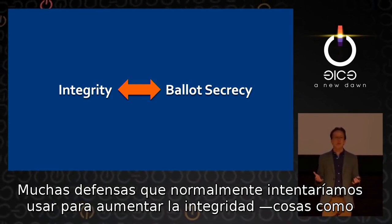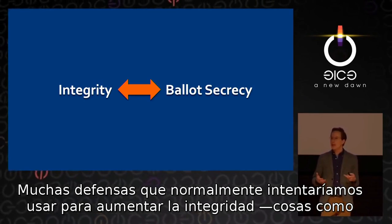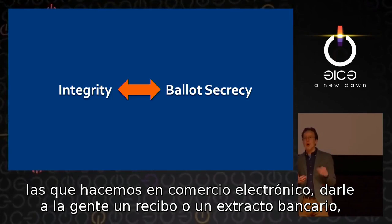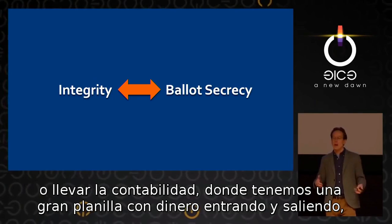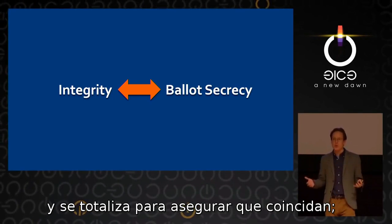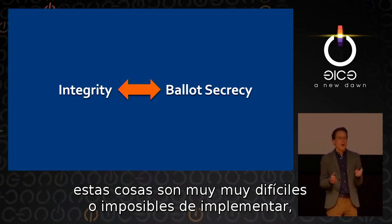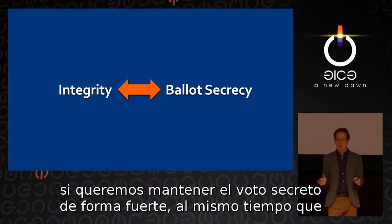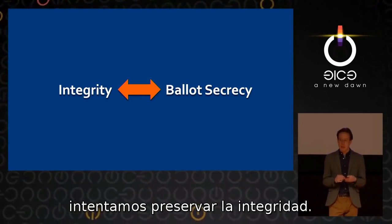Many defenses that we might normally try to use to increase integrity — things like we do in electronic commerce, such as sending people a receipt or a bank statement, or doing accounting where we have a big table where all the money in and out is totaled and we make sure they're in agreement — these things are very very difficult or impossible to implement if we want to maintain a secret ballot in a strong form at the same time as we're trying to preserve integrity.